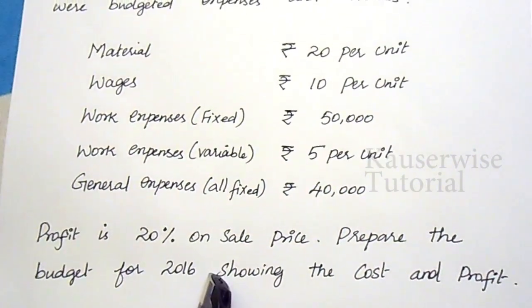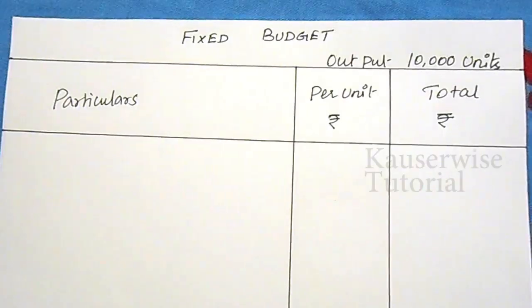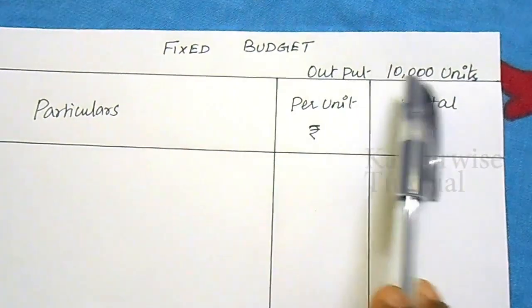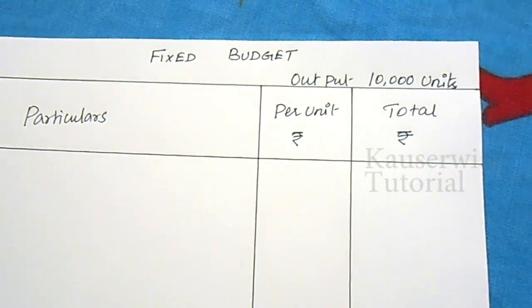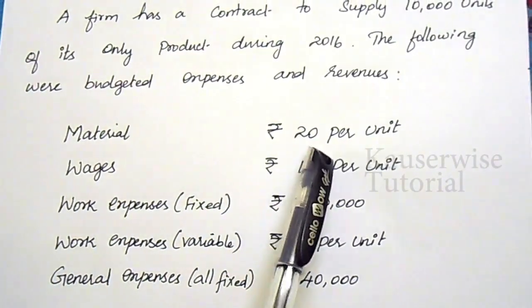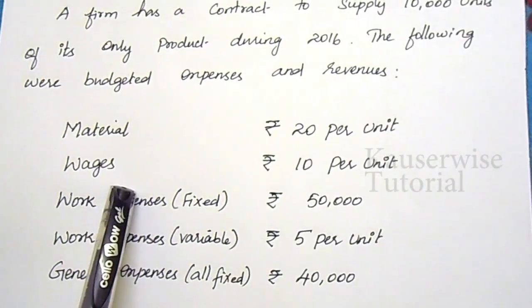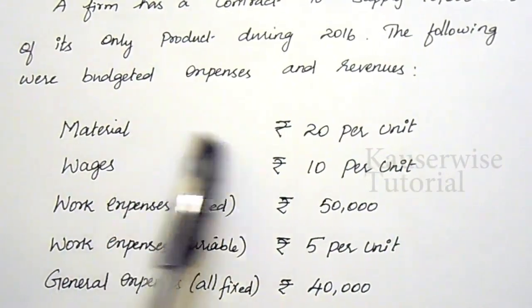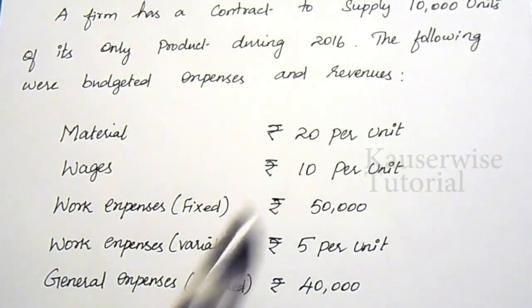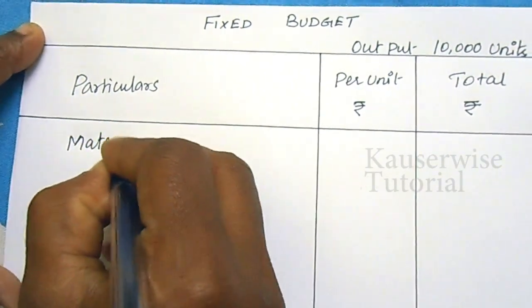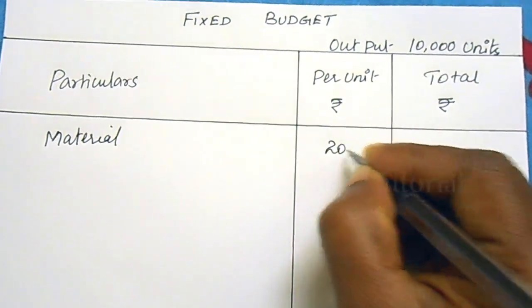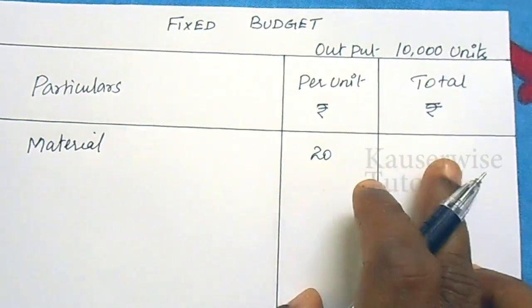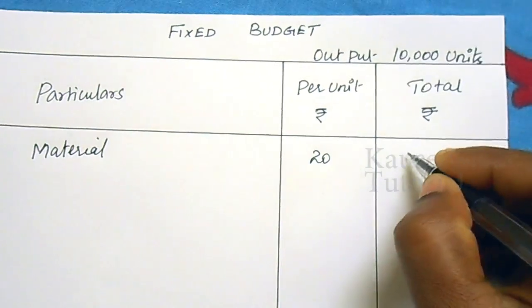The fixed budget format has columns for particulars, per unit cost, and total amount, with output of 10,000 units. The first item is material at ₹20 per unit — a variable cost. Variable costs like direct material, direct wages, and direct expenses are collectively called prime cost. Material cost is ₹20 per unit; for 10,000 units that gives a total of ₹2,00,000.